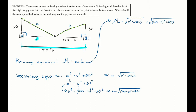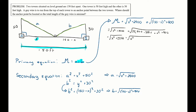I introduced a third variable x but ended up with everything in one variable, which is great. I need to simplify before taking the derivative. FOILing out (150 − x)² gives 22,500 − 300x + x². Adding 900 gives the second term under the radical as x² − 300x + 23,400.